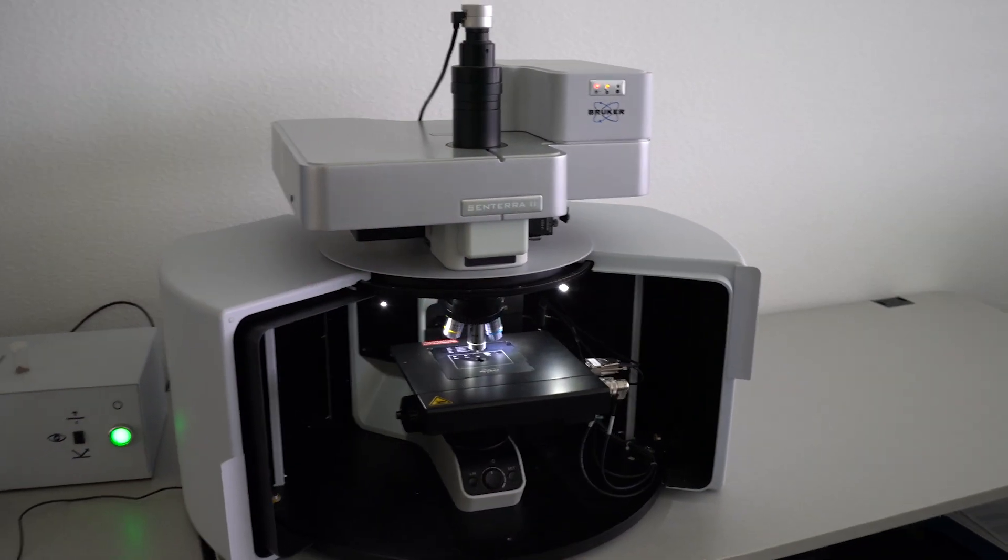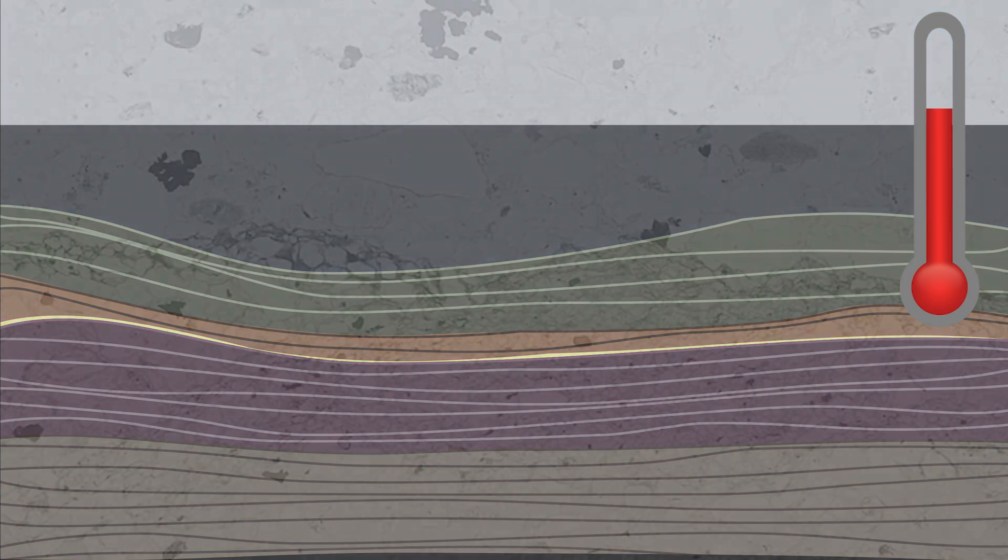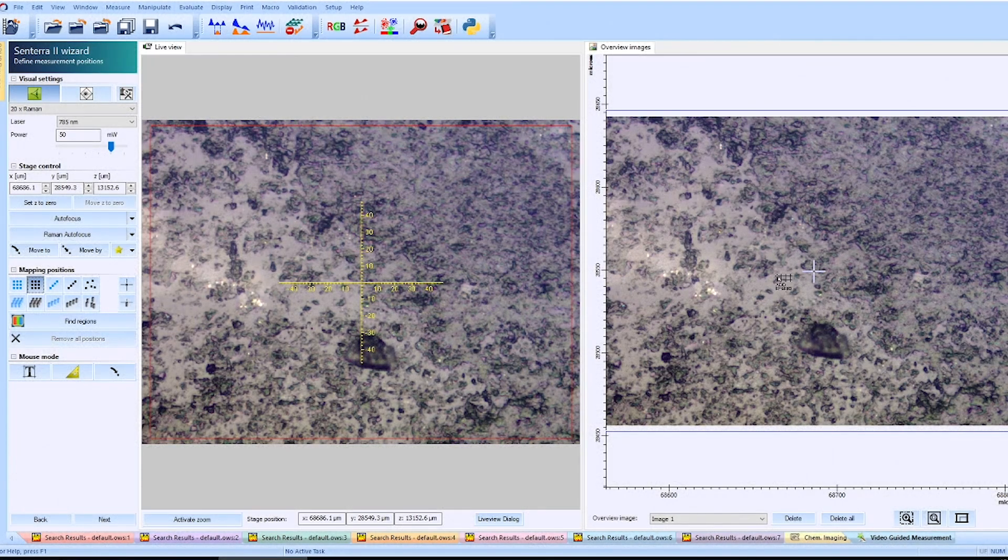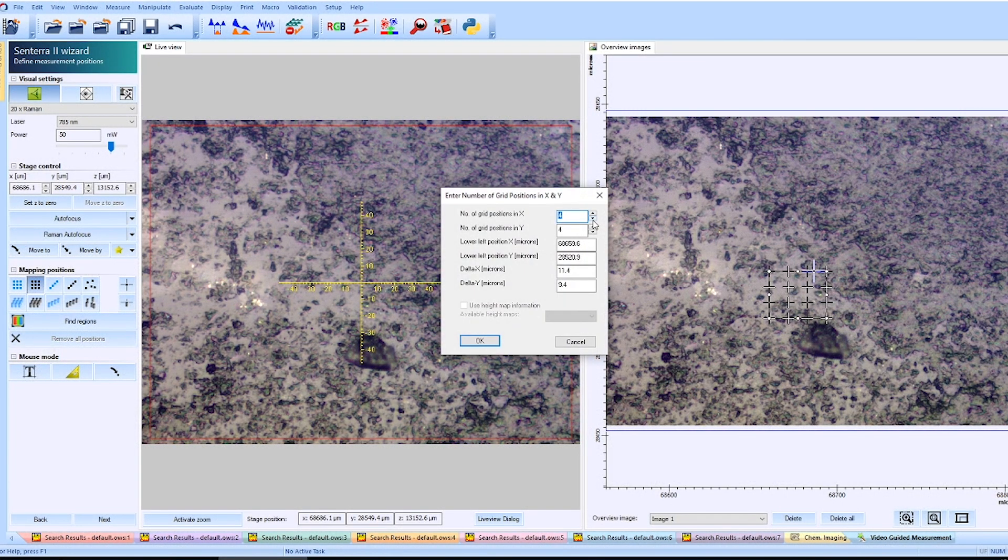Let's have a closer look at how Raman can help in determining the peak temperature that the rock has been subjected to during its long history. For this, we first identify a spot in the sample that is rich in carbonaceous matter.